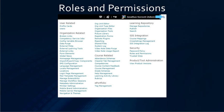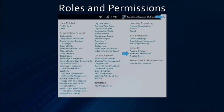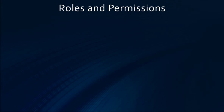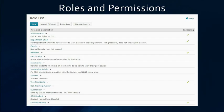To get to roles and permissions, you click on the admin tool widget and then click on the roles and permissions link. From roles and permissions, choose the role that you want to edit. We will start with the administrator role.